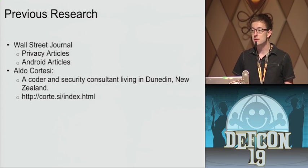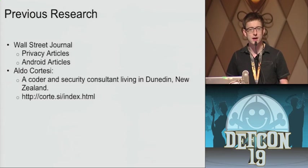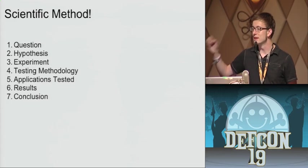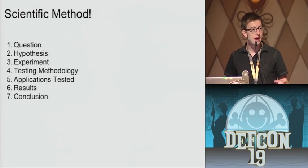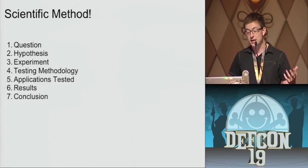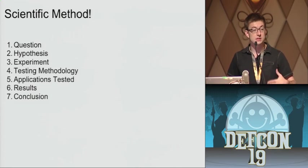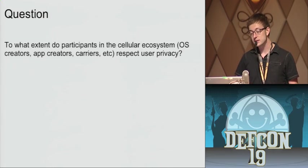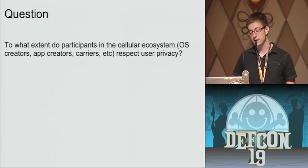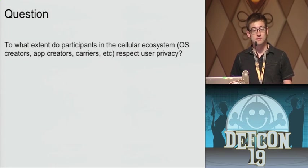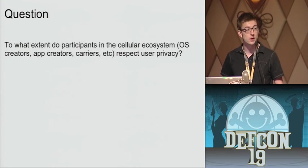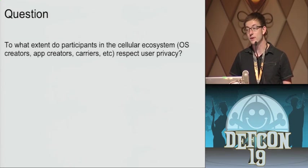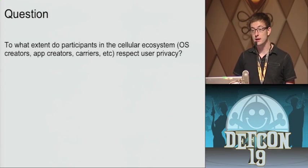So let's start looking at these applications — these applications that I blindly trust. Scientific method to the rescue. What I wanted to do was create a reproducible project that someone else could look at, done with standards that would display what our applications are sharing. The question I asked was: to what extent do participants in the cellular ecosystem — OS creators, app creators, carriers, etc. — respect privacy? In my research, I've only gotten as far as Android, but I hope to get to Windows phones, Blackberries, and iPhones.